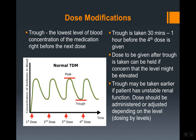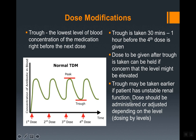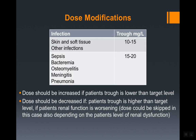Once you draw the trough blood level, you can generally give the next dose right after. However, in certain cases the dose may be held if there is concern the trough level is elevated, because as vancomycin accumulates and the patient can't clear it, trough levels rise and renal toxicity risk increases. The trough may also be taken earlier if the patient has unstable renal function — this is called dosing the patient by level.